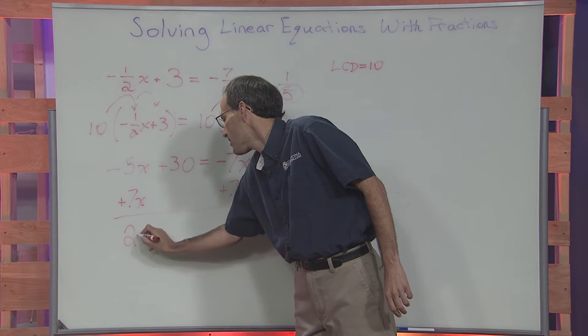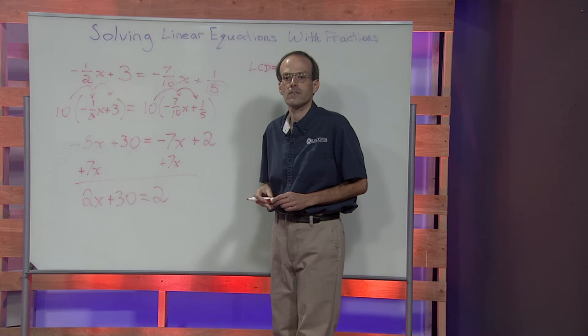Once we simplify, two x plus thirty is equal to two.